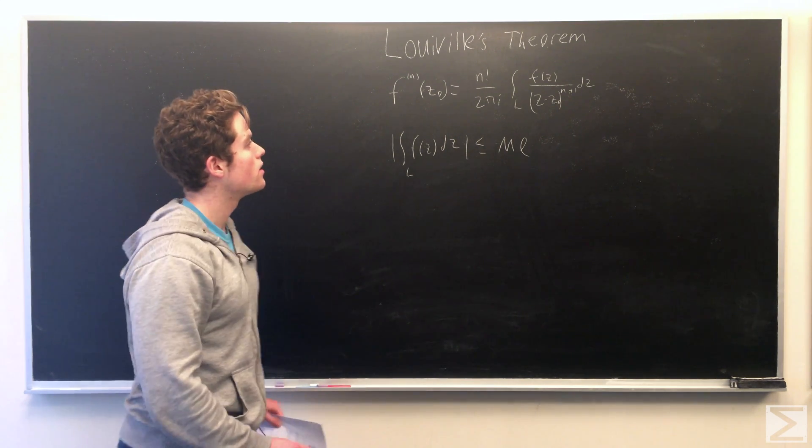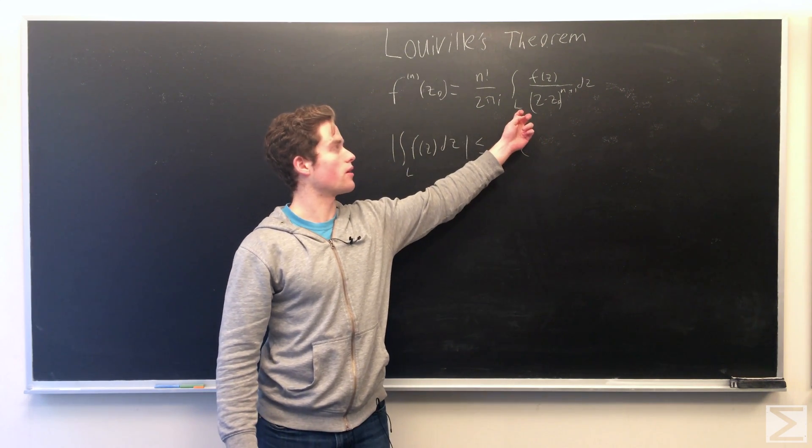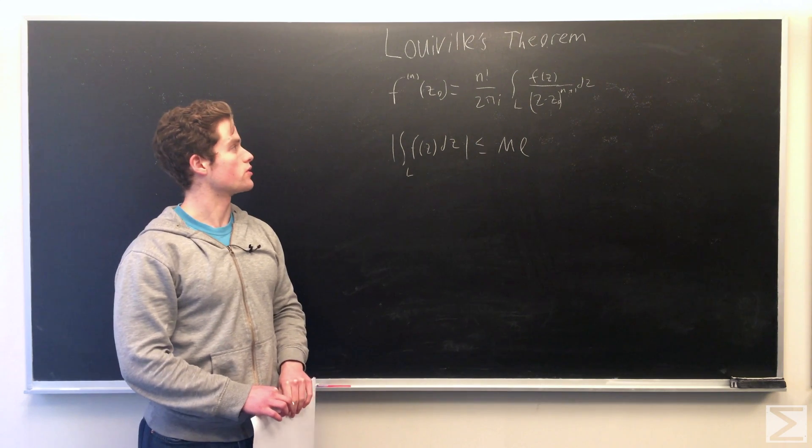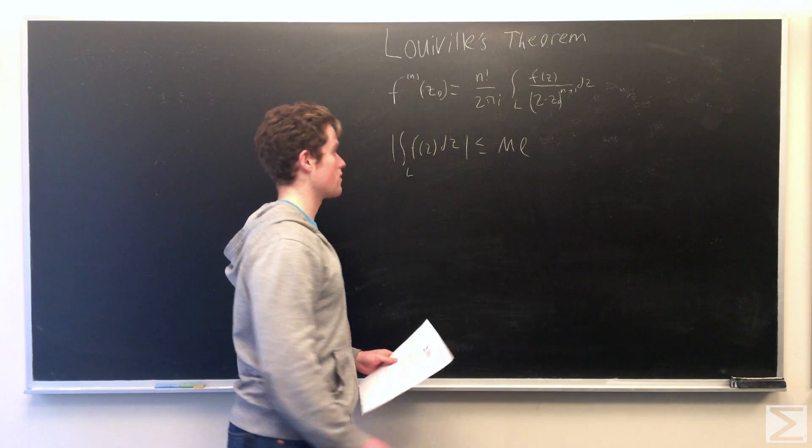So now we're going to look at this equation, we're going to say our curve is a circle, radius r. And so we're going to do some manipulation and see what comes out of it.